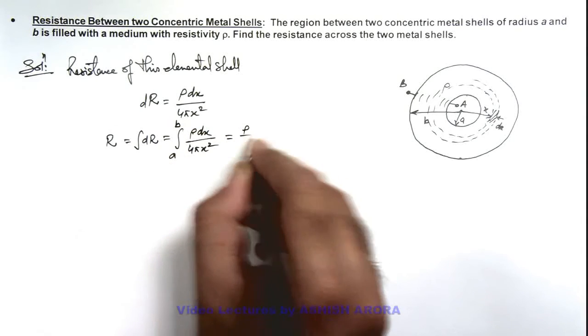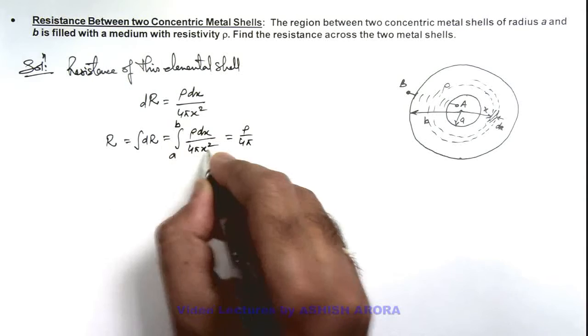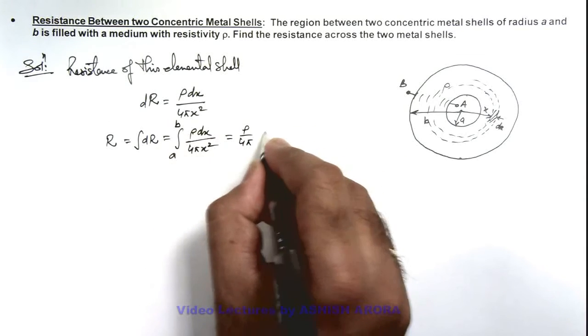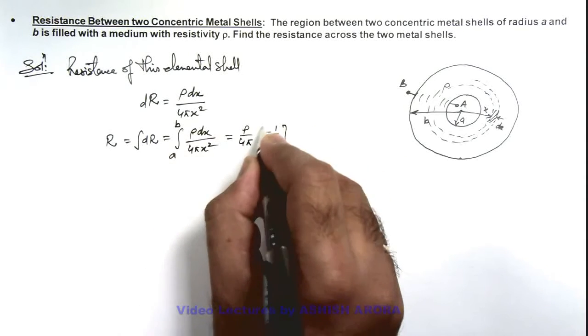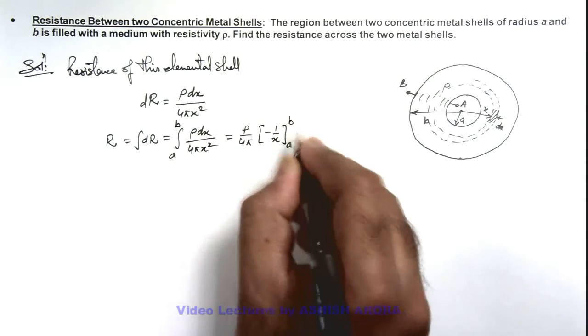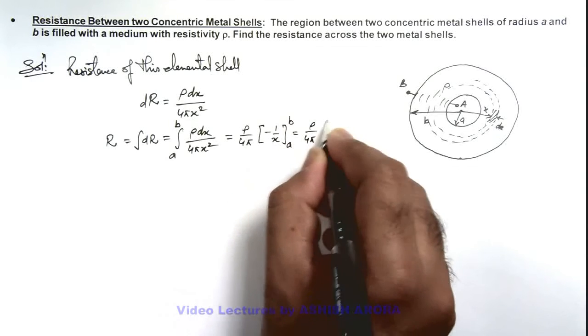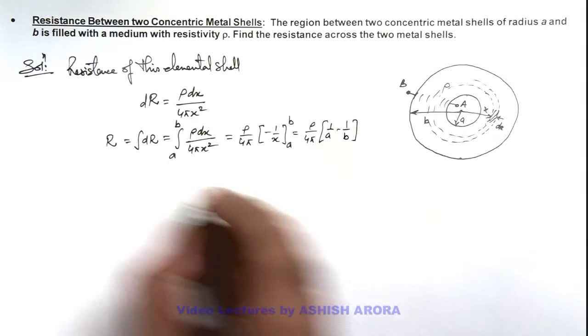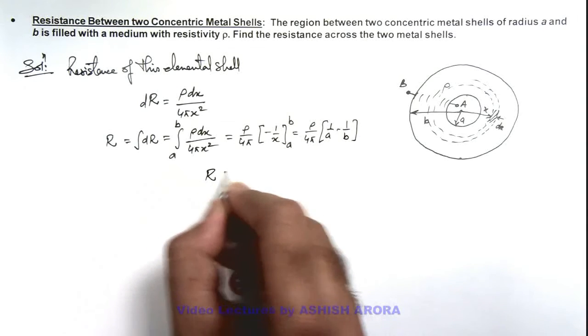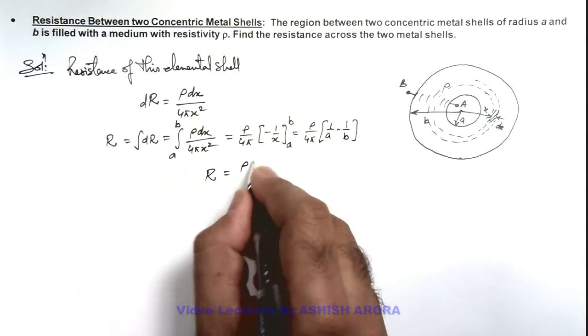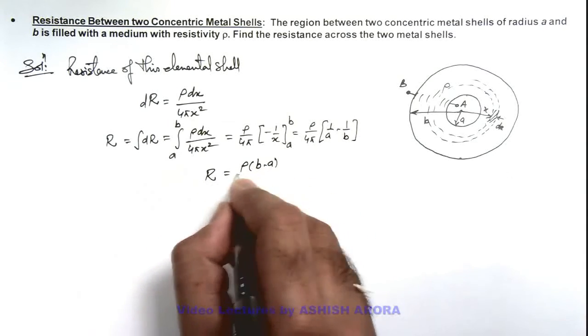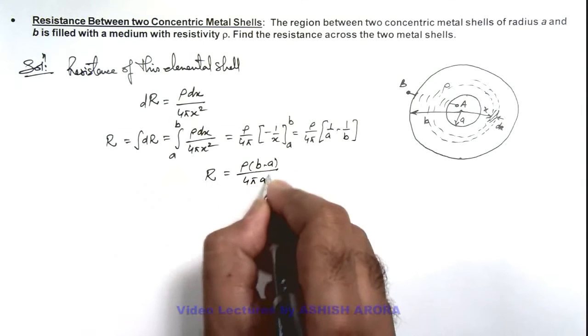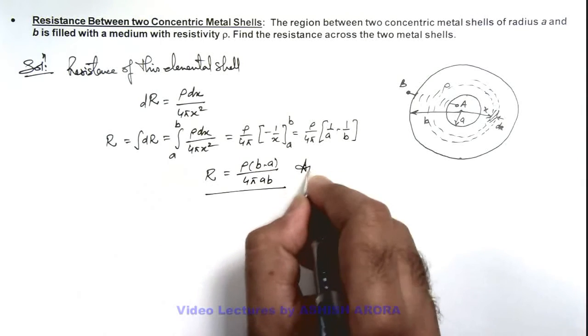Here it is ρ by 4π which is a constant. 1 by x² when integrated is minus 1 by x. We apply limits from a to b so this is ρ by 4π, 1 by a minus 1 by b. So the value of resistance across the shells is ρ(b - a) divided by 4π ab. That is the result of this problem.